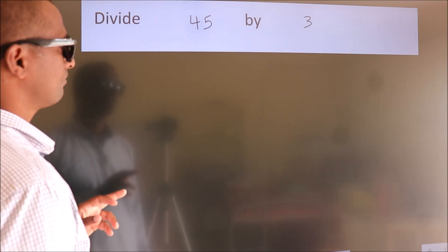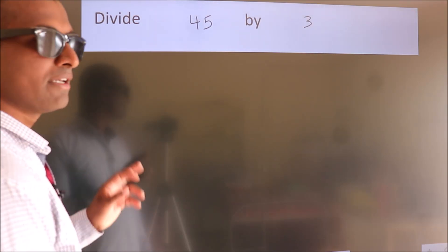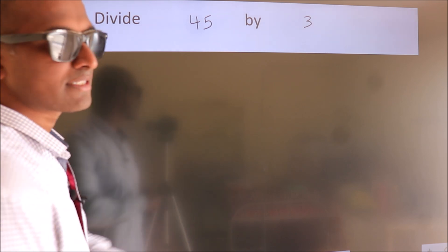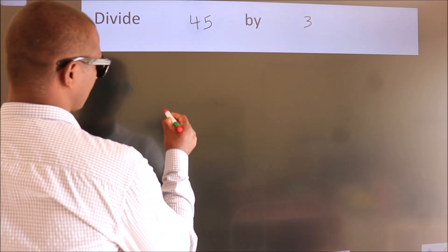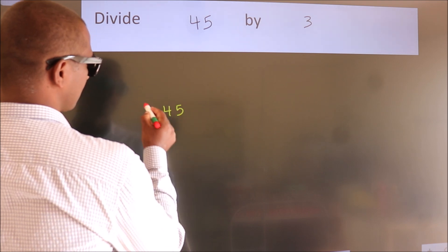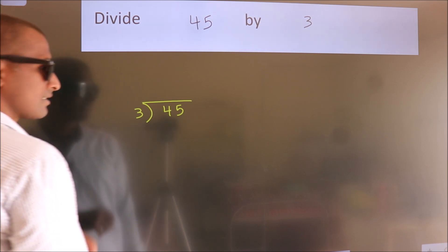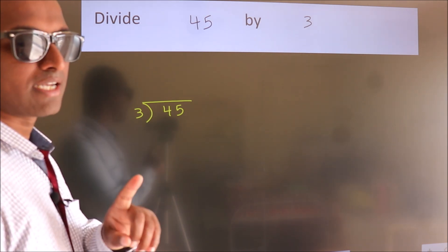Divide 45 by 3. To do this division, we should frame it in this way: 45 here, 3 here. This is your step 1.